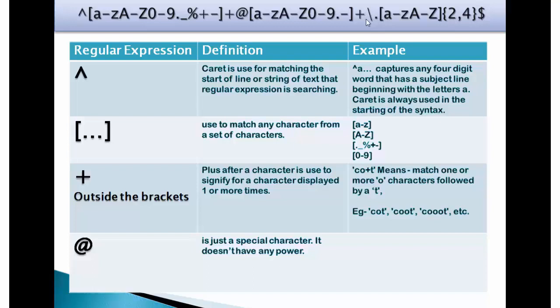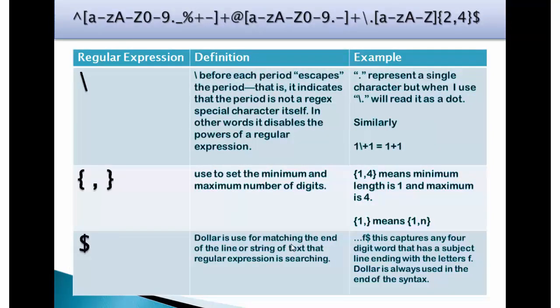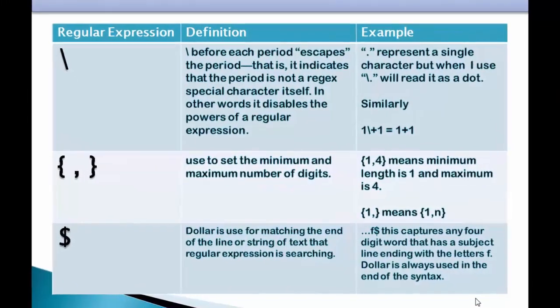And if you carefully see there is a backslash here. It is used to nullify the power of dot which is otherwise a regular expression that means one single character. So if I put a backslash here, it diffuses the power of this dot. This expression ends with dollar in last. Dollar is used for matching the end of the line or string of text that regular expression is searching. For example, let's say there are 4 dots and f followed by a dollar. This captures any 4 digit word that has a subject line ending with the letters f. Dollar is always used in the end of the syntax. Let's go back to the form and check out the next question.